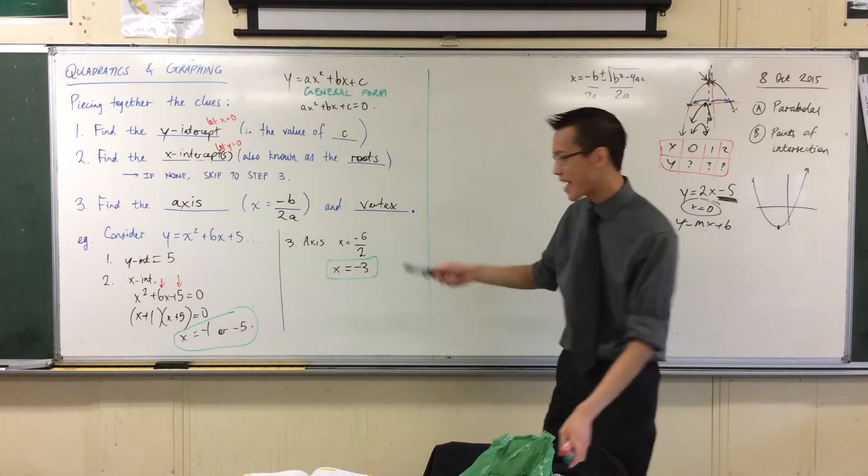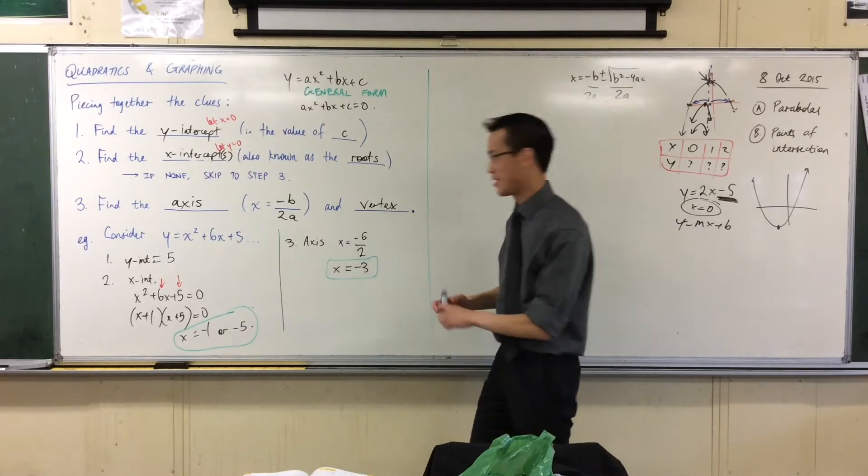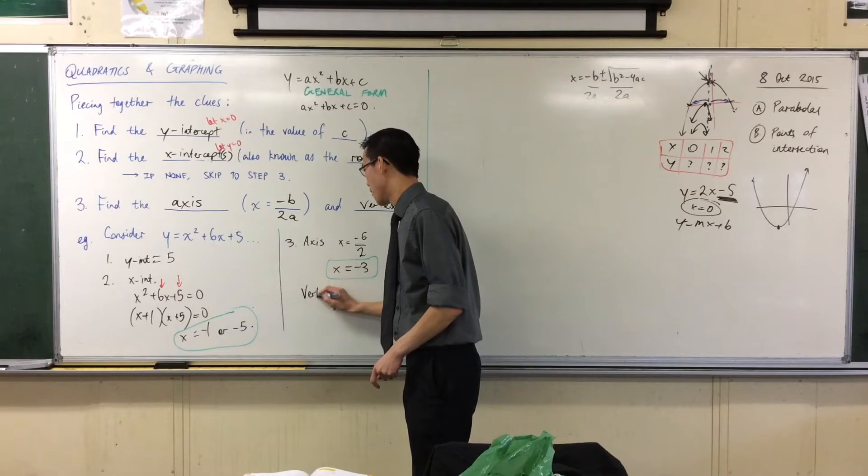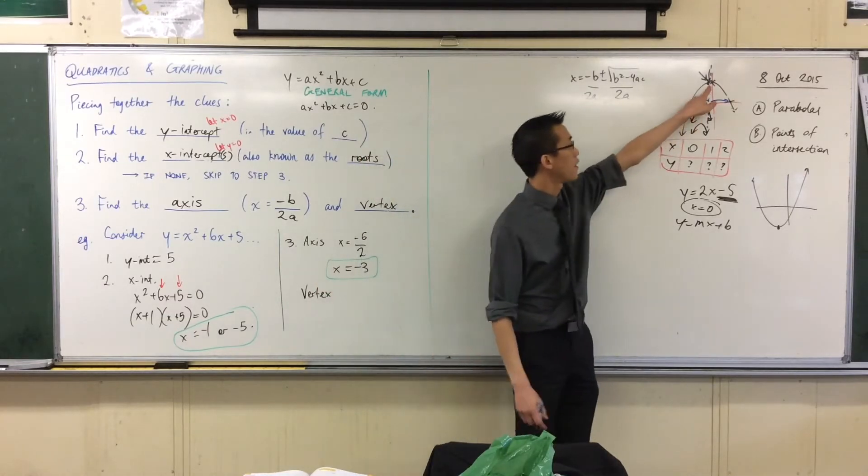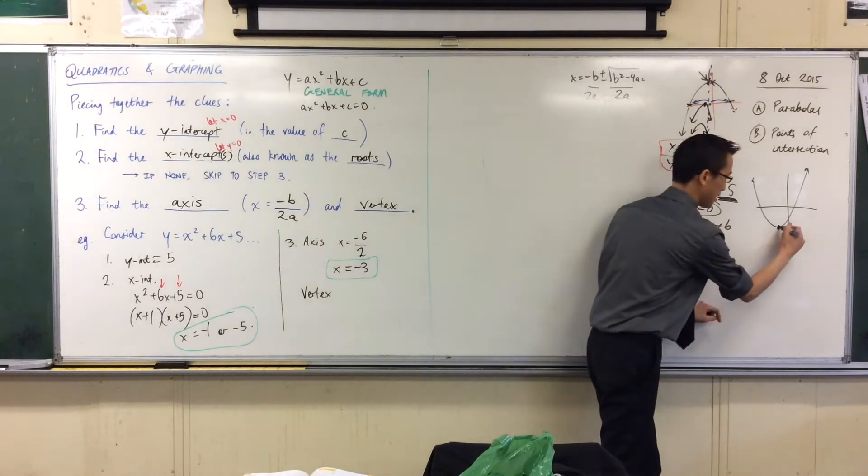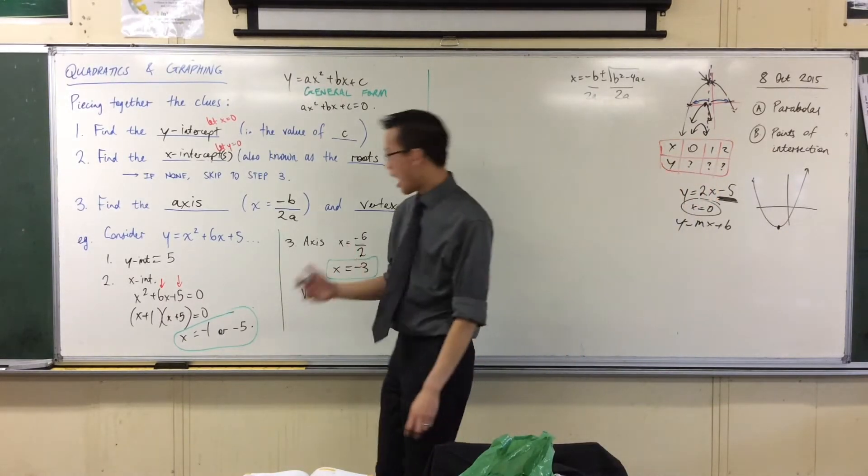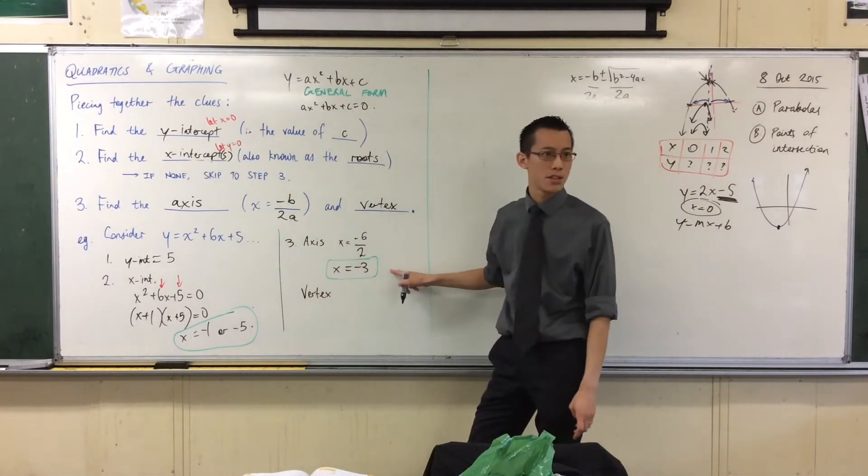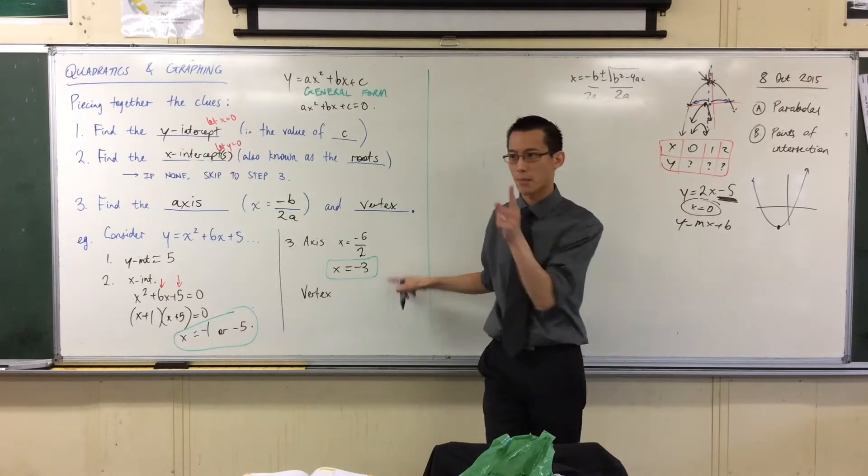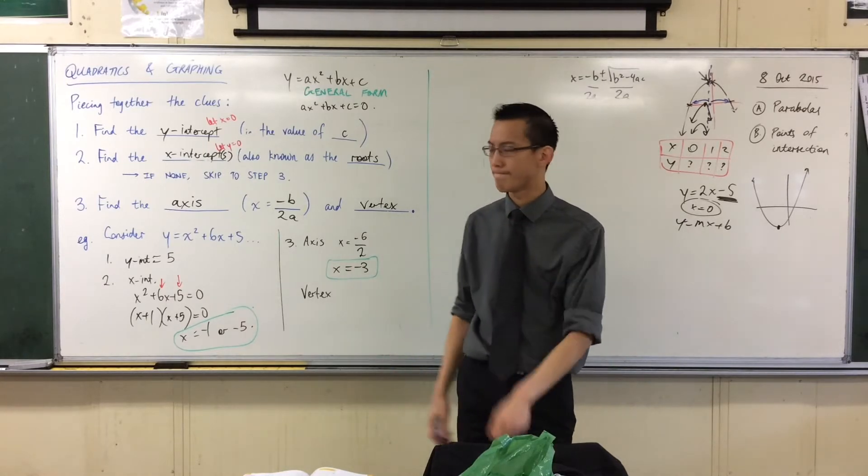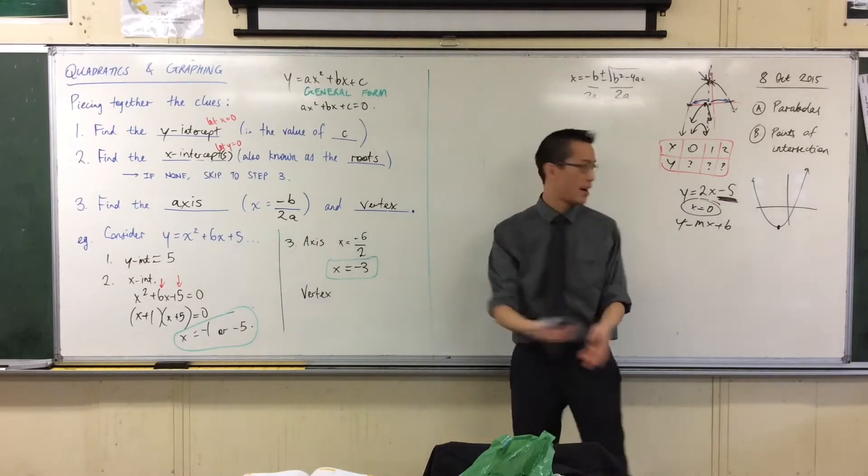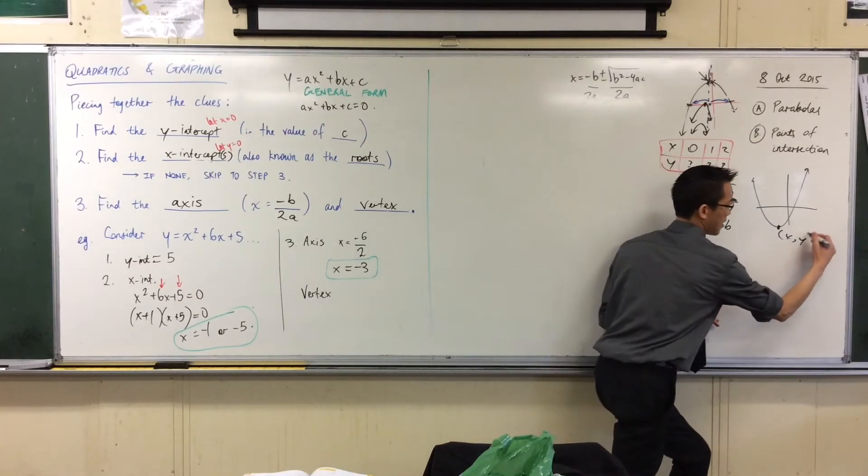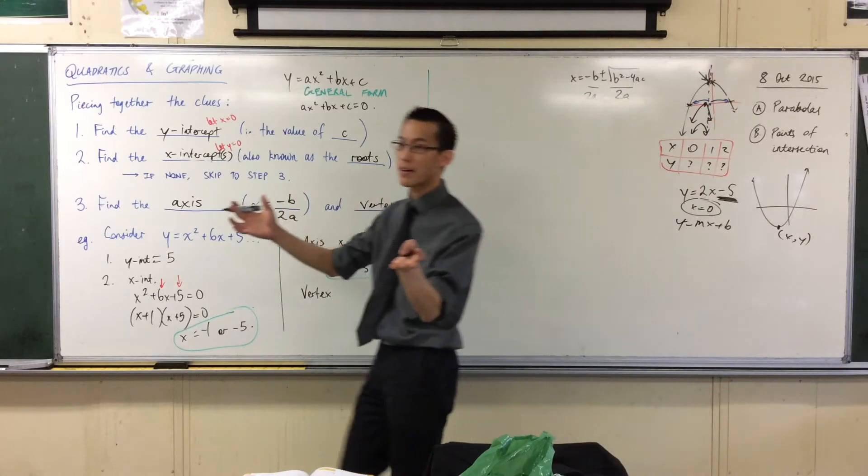All right. Now, I said I want to use the axis of symmetry to find this guy, the vertex. Now, a vertex, or the vertex, rather, it's a point. Like, it's a point up here, or a point down here. I don't have enough to define where a point is. I need one extra piece of information. What do I need? Y. If I've got an X, I'll need a Y. I need coordinates, don't I?